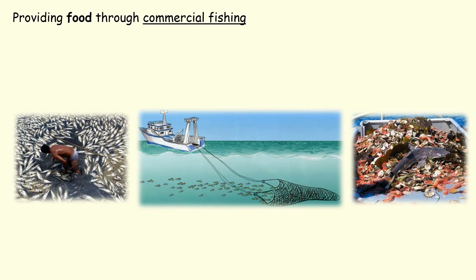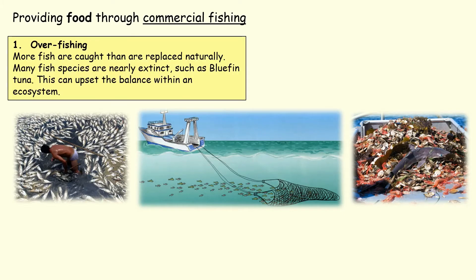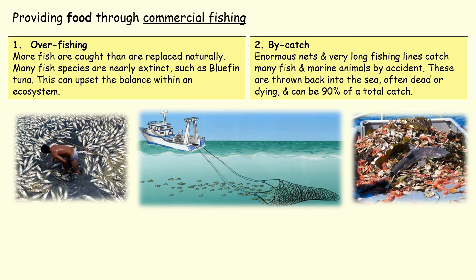Next we'll move on to providing food through commercial fishing. First, we are fishing out of the sea more fish than can be replaced naturally. Certain species such as bluefin tuna are on their way to becoming extinct. Secondly, a large amount of fish that we catch we don't actually want — they get swept up in enormous nets and very long fishing lines. For example, a fisherman didn't want the shark, but the shark has died all the same, which is incredibly wasteful.